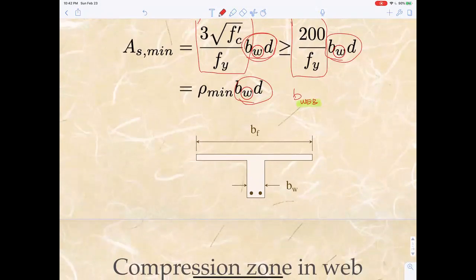So when you calculate AS-min, you are going to use B of the web. However, when you calculate rho, you're going to do AS over the compression width Bf times D, and this is going to be a small number because Bf is bigger.